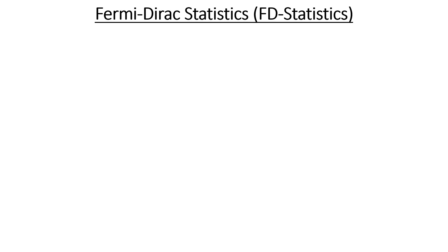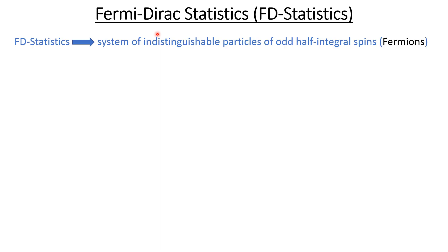Assalamu alaikum. After discussing the Bose-Einstein statistic, today we are going to discuss the Fermi-Dirac statistic and derive a formula for the thermodynamic probability of a system that follows the Fermi-Dirac statistic. Fermi-Dirac statistics is applicable to a system of indistinguishable particles of odd half-integral spin, and those particles are known as fermions.